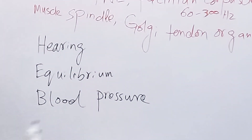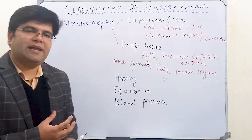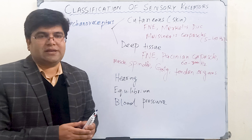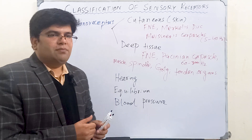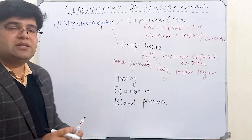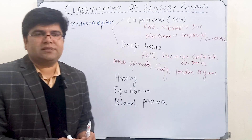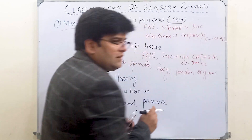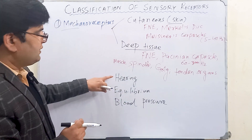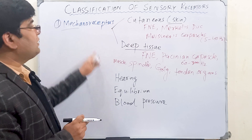Receptors that detect changes in blood pressure are also mechanoreceptors — they are present in the arch of the aorta and the carotid sinus, and we call them baroreceptors. Blood pressure is a mechanical stimulus; when it increases or decreases, it mechanically puts more or less pressure on the larger blood vessels and an appropriate response is produced. All these receptors — in the skin, deeper tissues, cochlea, vestibular apparatus, and larger blood vessels — are called mechanoreceptors.